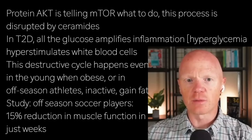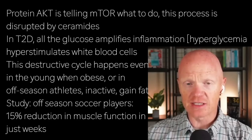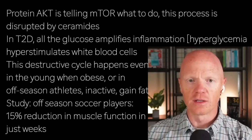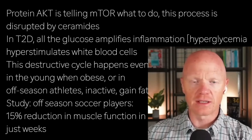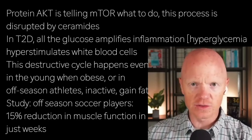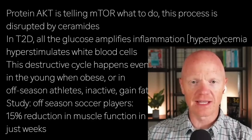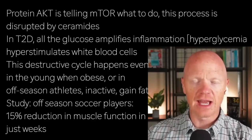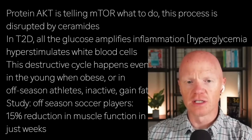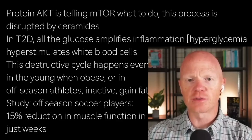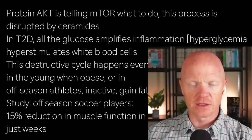This overlaps heavily with type 2 diabetes, where you have all the glucose amplifying inflammation. Hyperglycemia results in hyperstimulation of white blood cells and immune-related cells, and we have that ceramide buildup, which starts to create a very vicious cycle. We see this even in young individuals who are obese, especially in off-season athletes who suddenly become less active and gain fat. There's a human study showing that professional soccer players during the off-season can have a 10–15% reduction in muscle function in just weeks, so early intervention is critical.